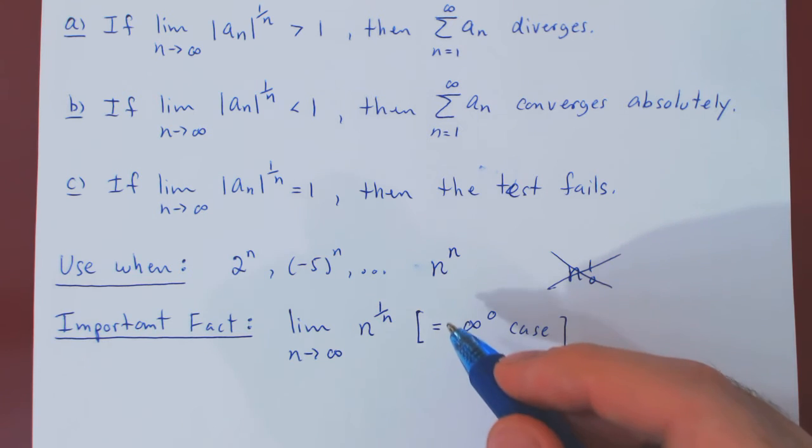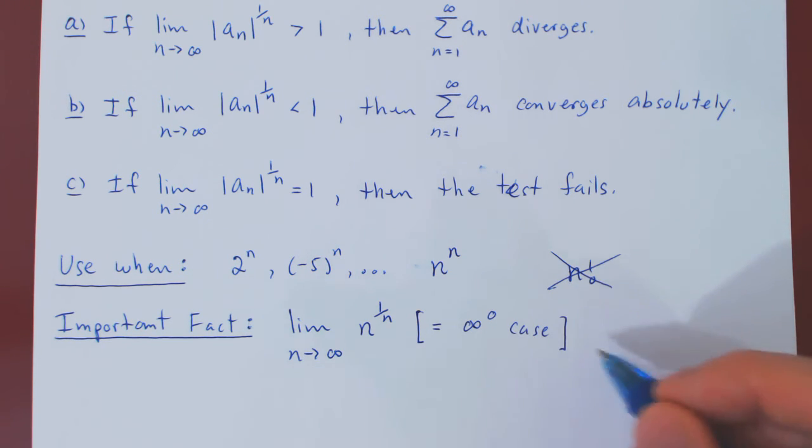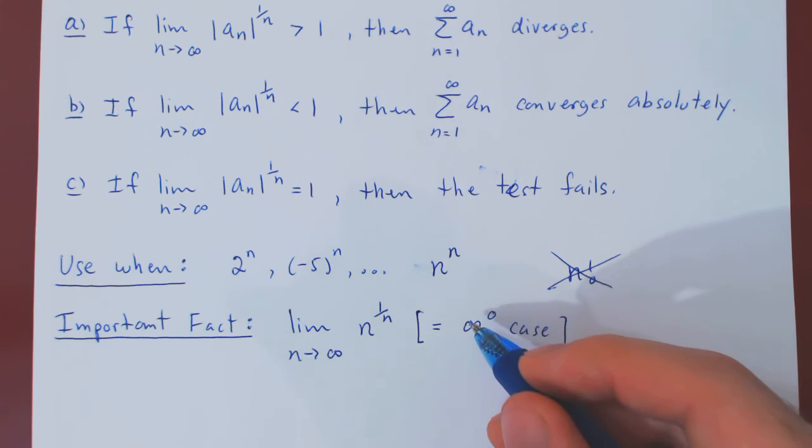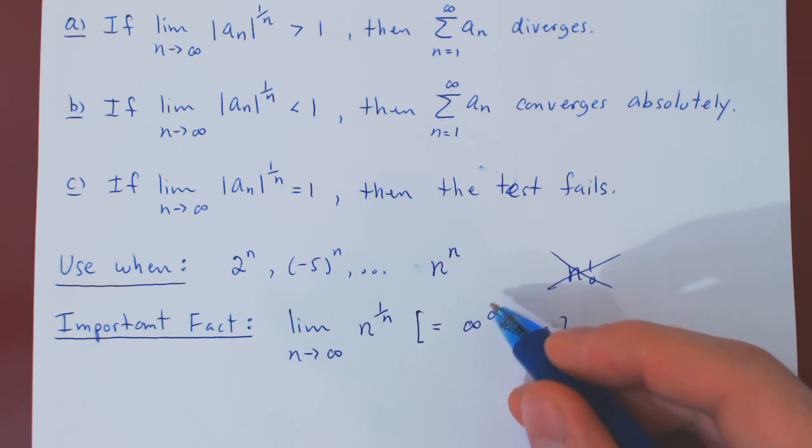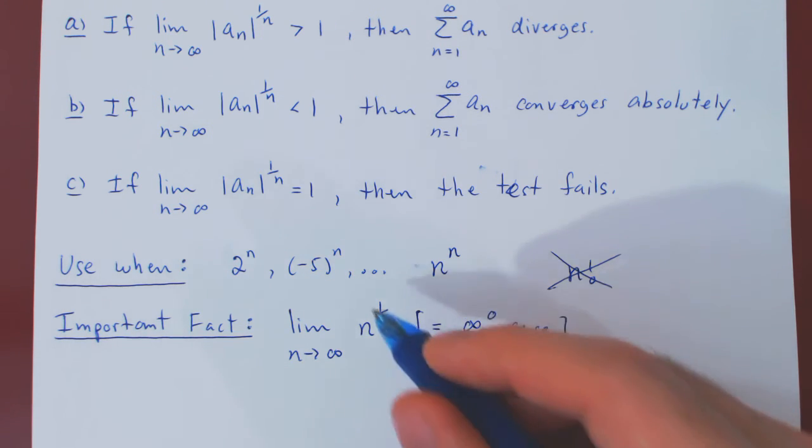And as we have seen many times in the past, an infinity to the 0 case may yield any possible answer, as we have the base pushing the expression towards infinity, but the exponent being 0 pushing the expression towards 1.